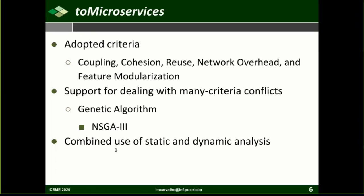To resolve the conflicts among these criteria, search-based software engineering techniques were adopted. µTosca uses the genetic algorithm NSGA-III for multi-objective optimization to identify microservice candidates, optimizing the five criteria concurrently. µTosca also explores the synergy between static and dynamic analysis, as some criteria are more appropriately observed by static methods — for example, cohesion — while other criteria require dynamic measurement — for example, network overhead.